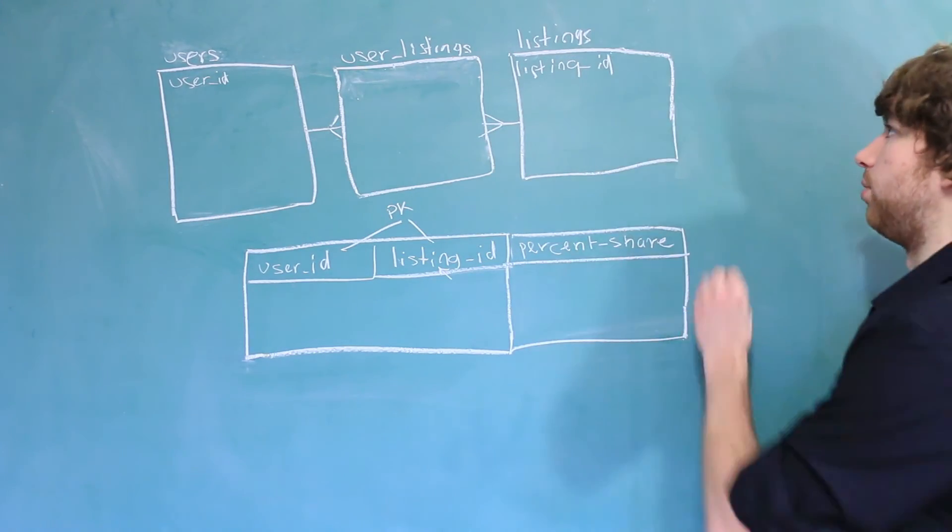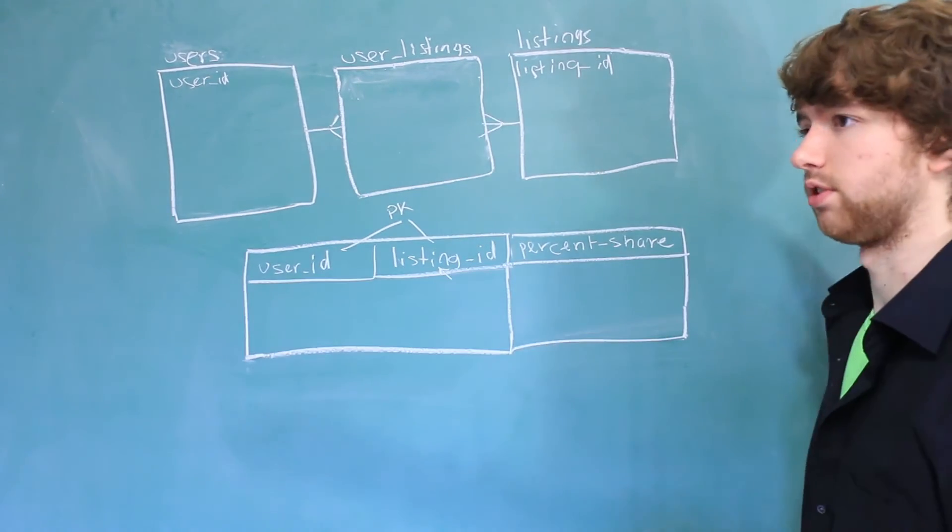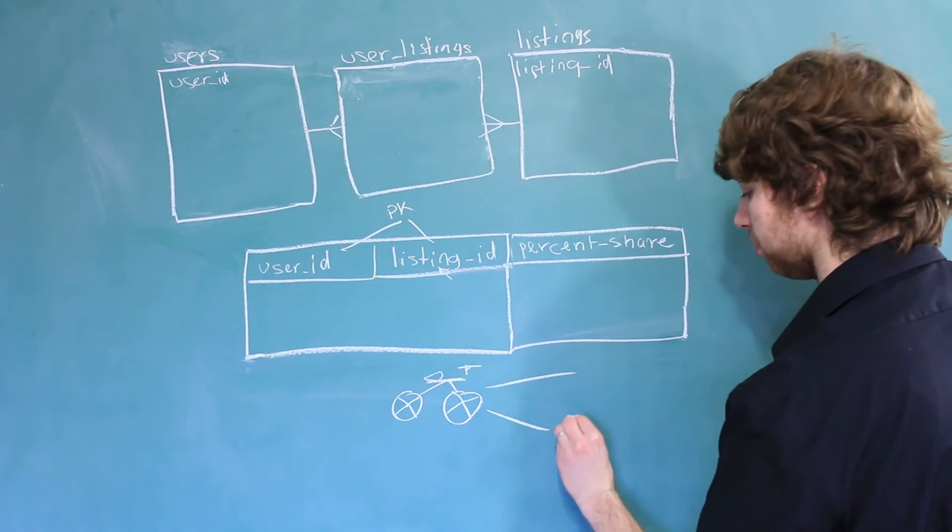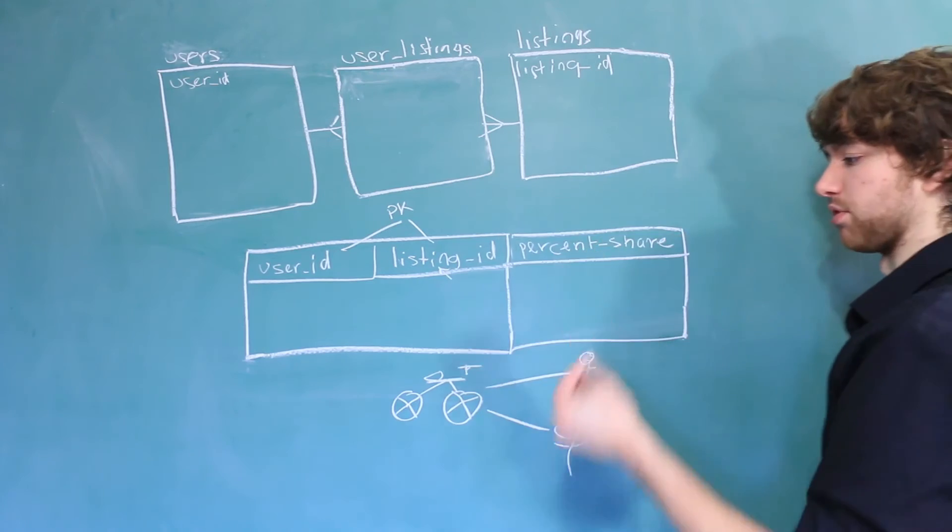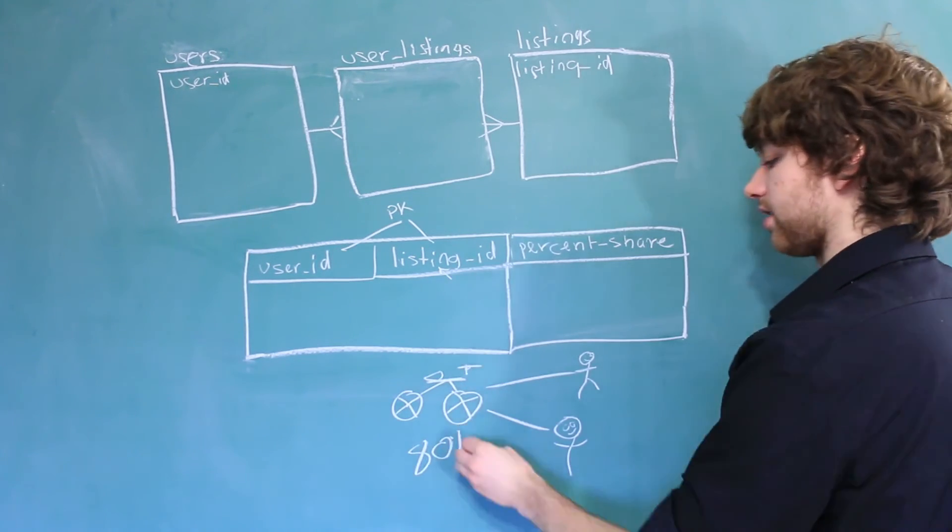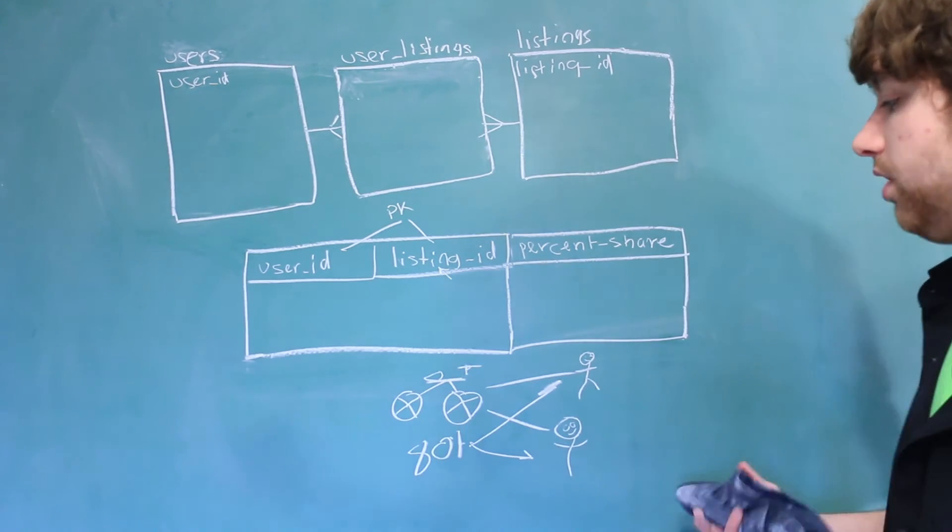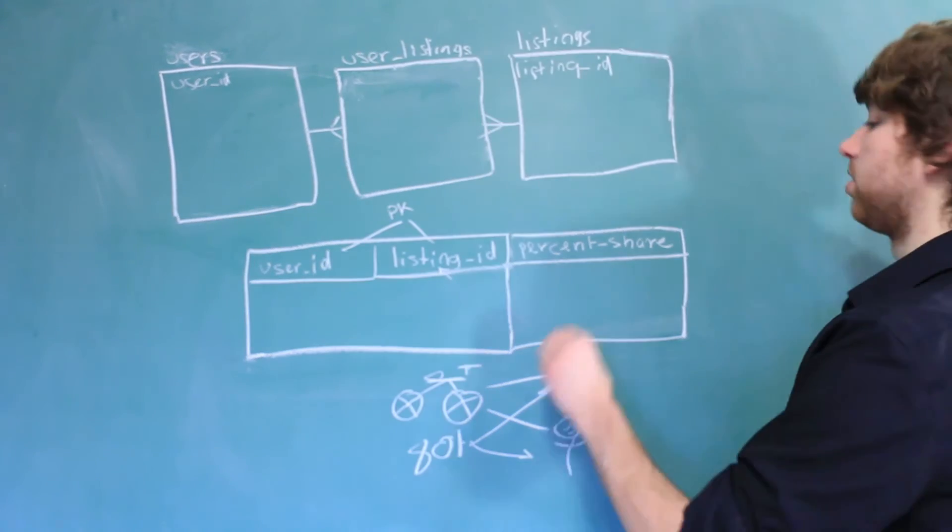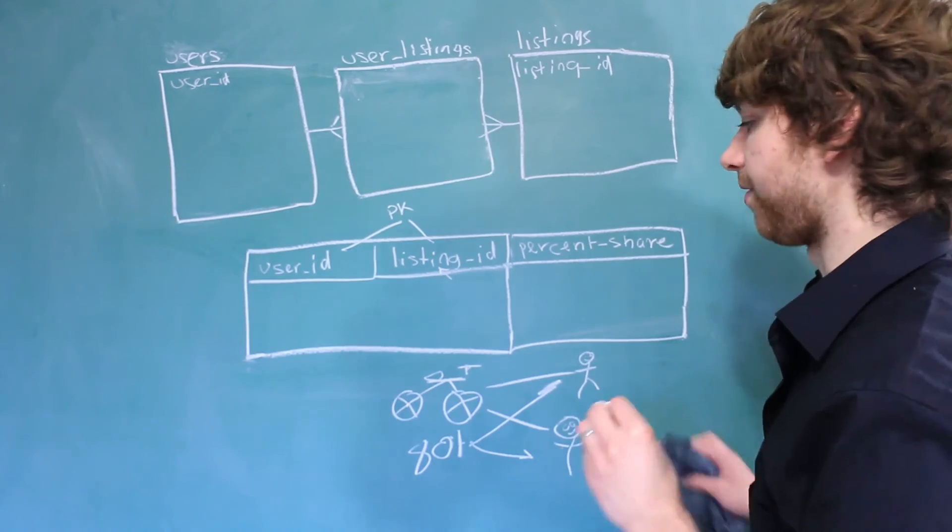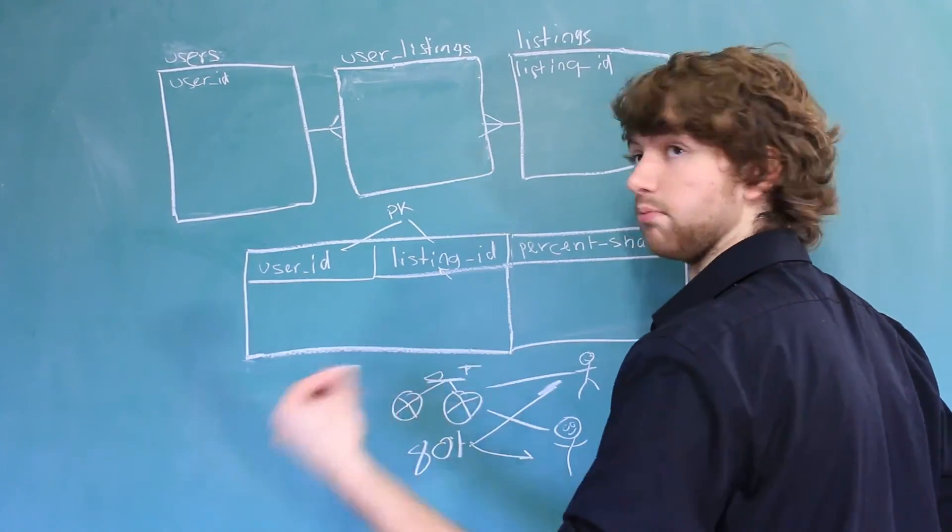This would not go inside of the listing table. That's because it depends on which user. If an item, let's say we have a bicycle, and this is being sold by two people, we couldn't say a specific percentage inside of the listing table. For example, if we said 80%, is that discussing this user or is it discussing this user? We don't really know, so that's not very clear. That's why you wouldn't want to put something like the percentage share inside of the listing table. At the same time, you wouldn't want to put it in the user table though, because you might have one user selling multiple items.